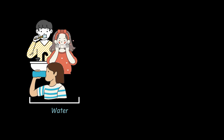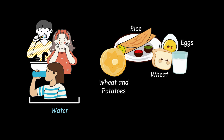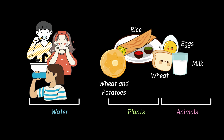Then maybe you sip some water as well. Then you have some nice breakfast — maybe some aloo paratha or dosa, or some bread with eggs and a glass of milk. Aloo paratha needs wheat and potatoes that come from plants. Dosa is made from rice, which is a plant again. Bread with eggs and milk calls in both plants and animals.